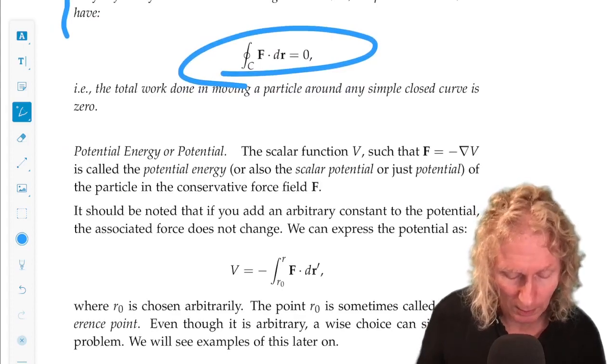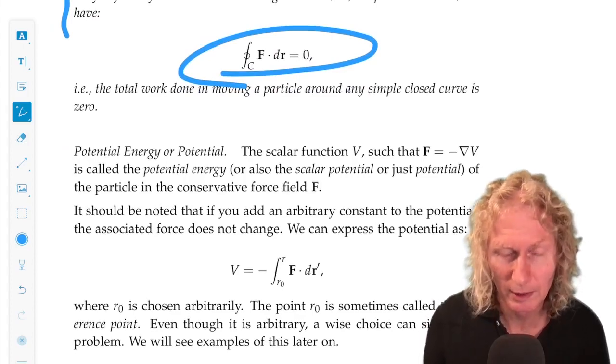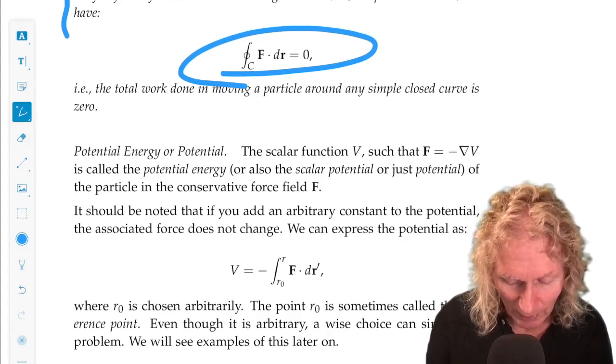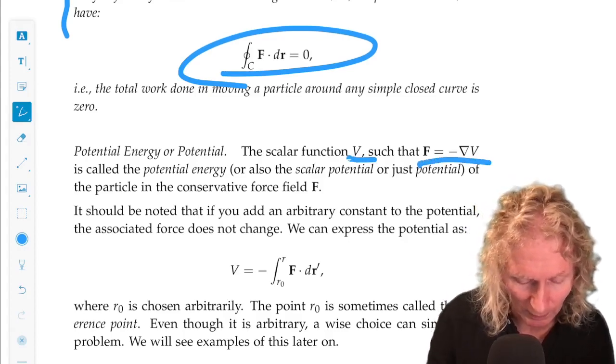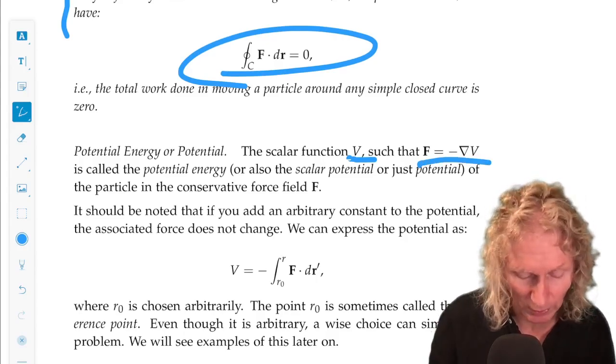So, now I can talk about this terminology that I keep slipping into. The scalar valued function, V, having this property, that the force is conservative, is called the potential energy.